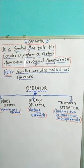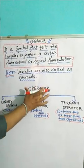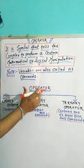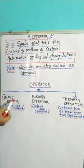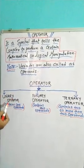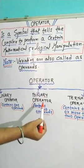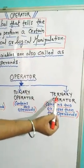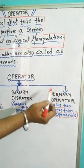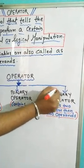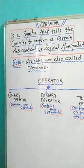Now we will discuss the types of operators. Operators are of three types: the first is called unary operator, the second is called binary operator, and the third is called ternary operator.